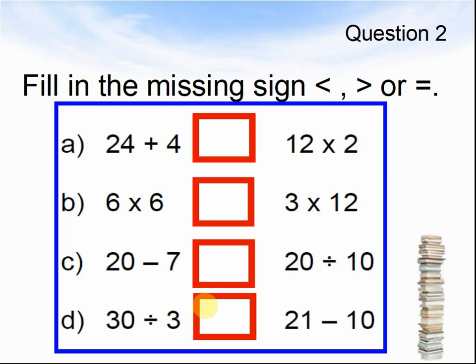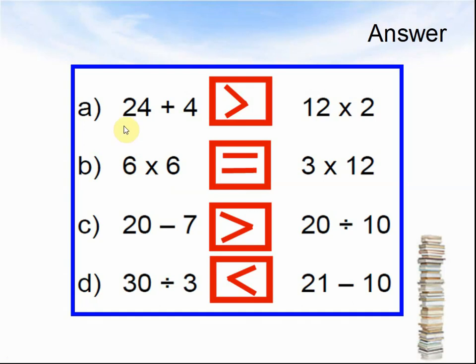Pause the video until you are ready to see the answers. Here comes the answers. 24 plus 4 makes 28, which is bigger than 12 times 2, which is 24. 6 times 6 equals 36, so this is the same as 3 times 12, which equals 36.